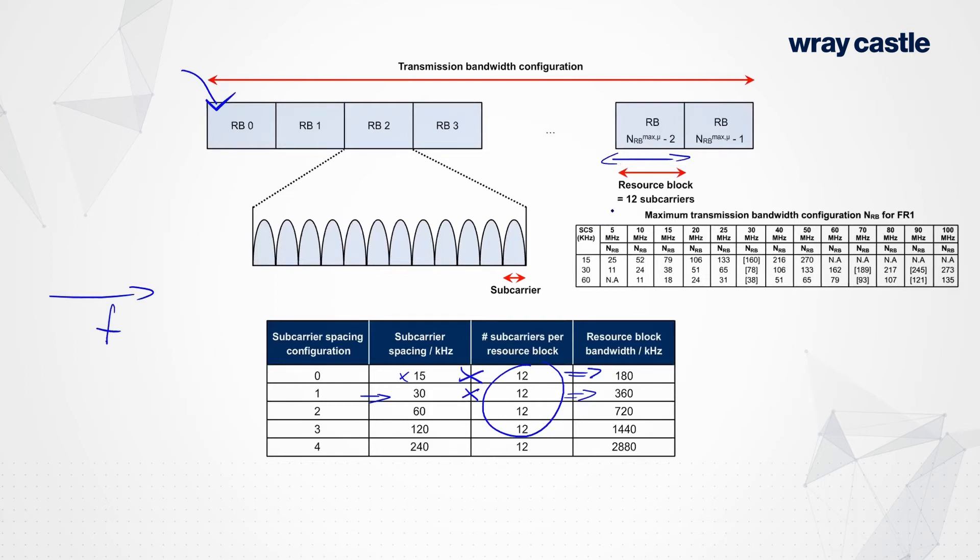For example, when we look at a five megahertz channel, so in this table, when we look at a five megahertz channel, if we are using the numerology zero, we can fit into that 25 resource blocks. However, in that five megahertz channel, we can also support the numerology number one, which gives us a 30 kilohertz sub-carrier spacing. And because you double the sub-carrier spacing and you double the bandwidth of a resource block, you can now only support somewhat less than half the number of resource blocks. Now you'll see that as a trend going through the entire system.